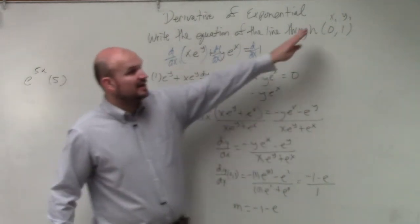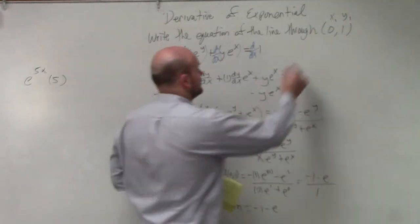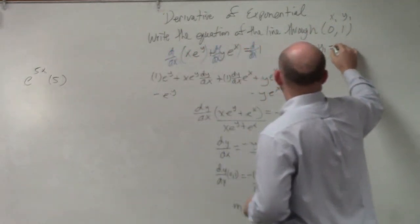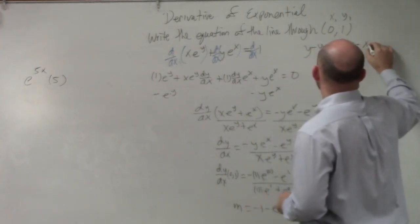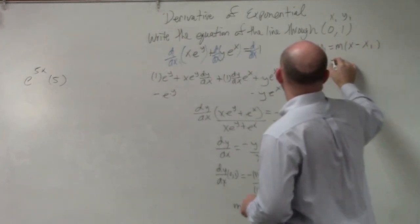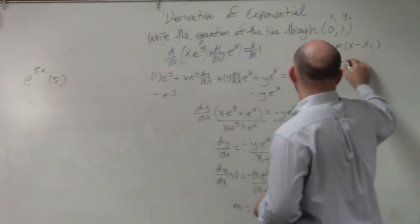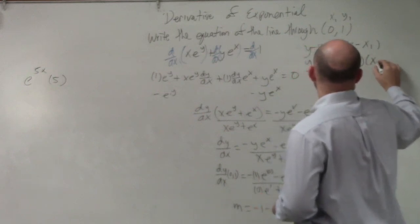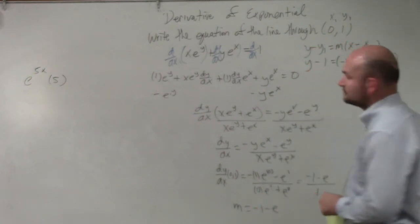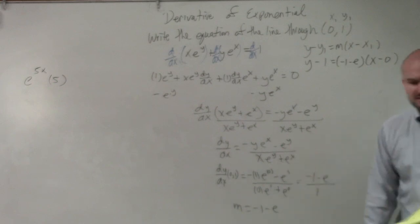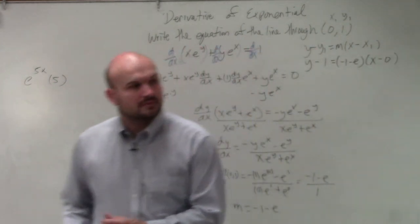So now I have my m, I have my x, and I have my y. y minus y1 equals m times x minus x1. y minus 1 equals m, which is negative 1 minus e, times x minus 0. And obviously, you could further simplify that as you need.